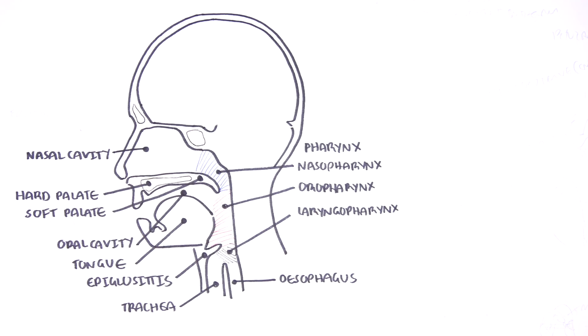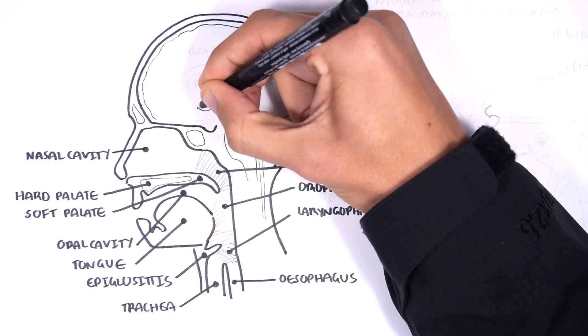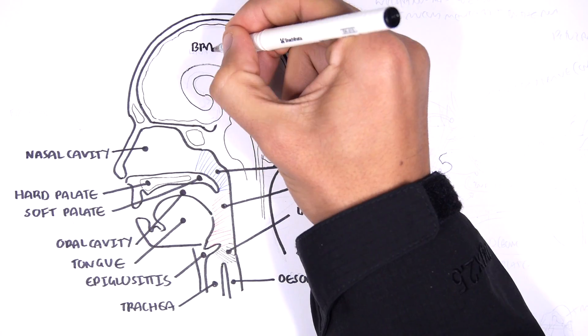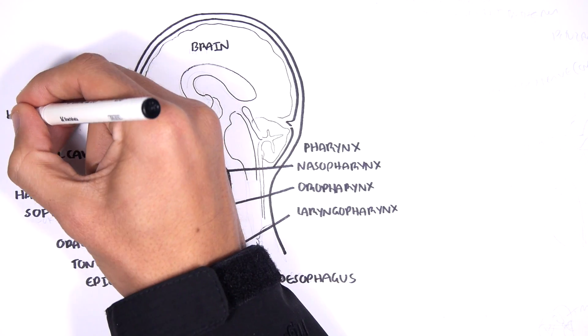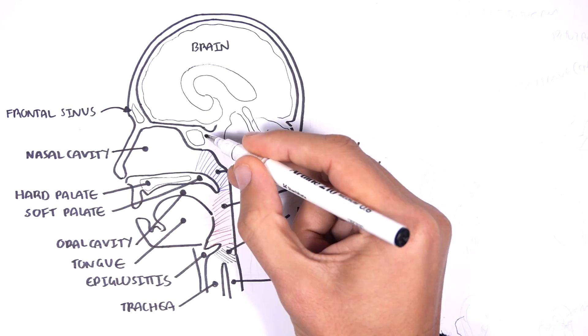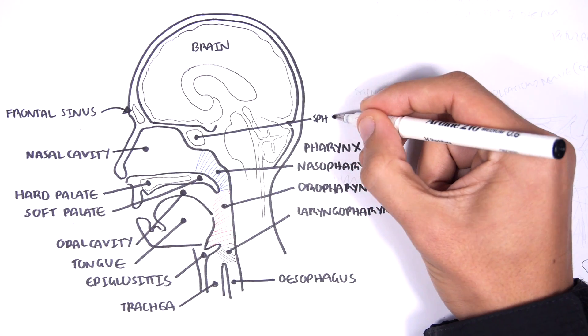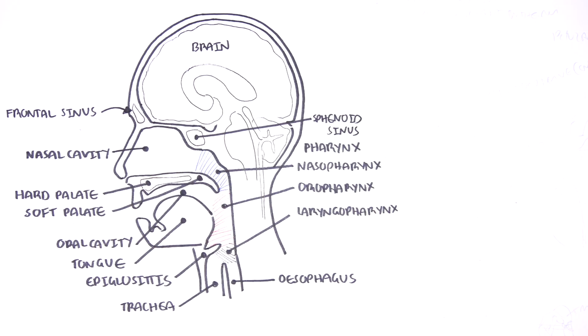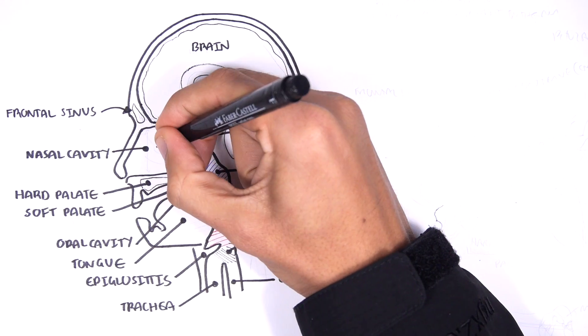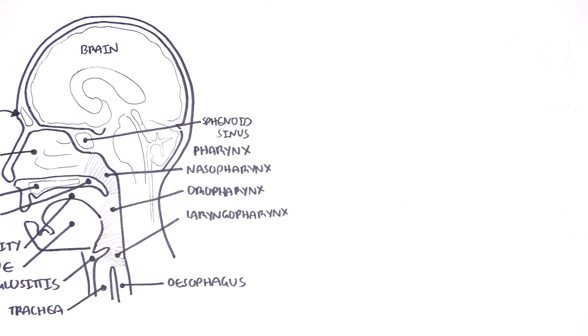Your brain sits in this cavity here at the top, surrounded by bone. There is a small hole in the front of our skull. And this is actually a sinus, called the frontal sinus. Sitting at the posterior, superior aspect of the nasal cavity is another sinus called the sphenoid sinus. Of course we have more sinuses than this, but it's good to know these two for now.